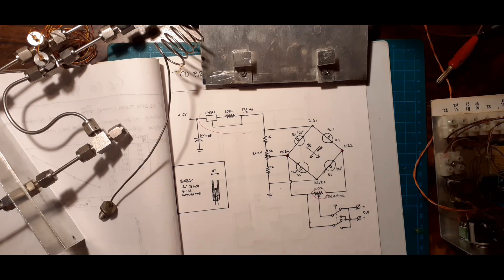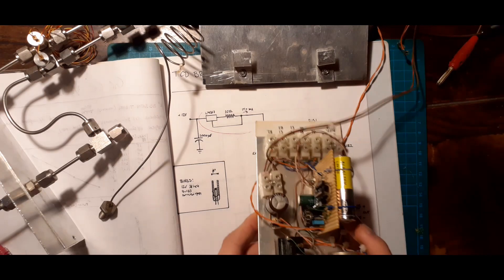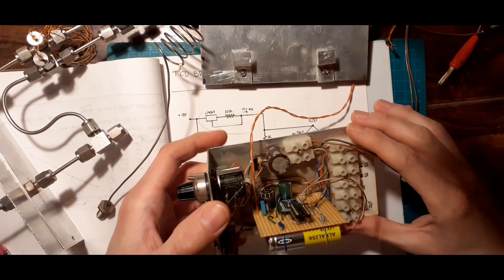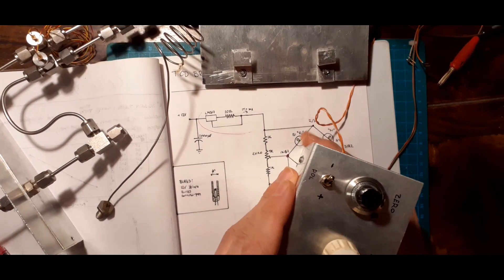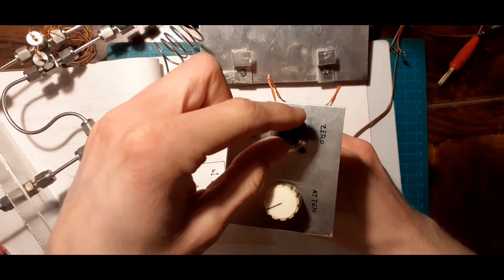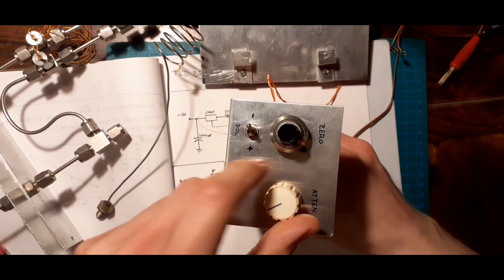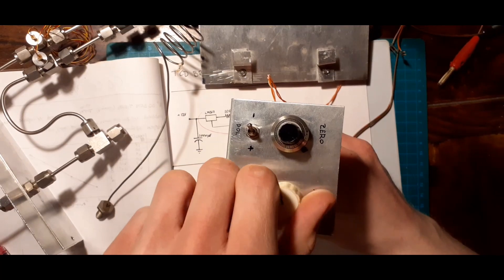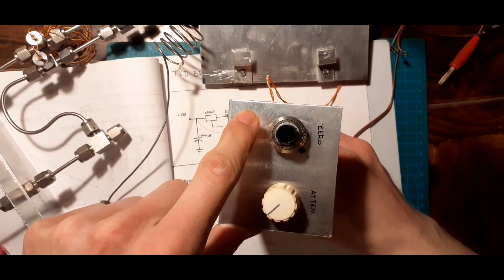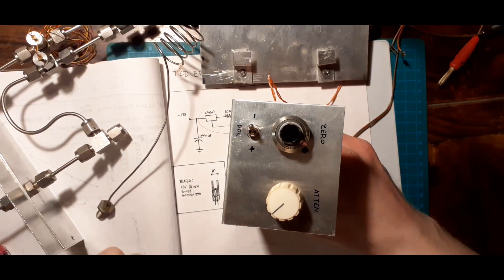Let me show you how this circuit actually looks in real life. I have this here, and you can see the controls here. I have the zero here as a 10-turn pot with a locking vernier scale. I have the attenuator here. I'll be honest, I've never used it. And I have a switch here, which just switches the polarity of the output signal.